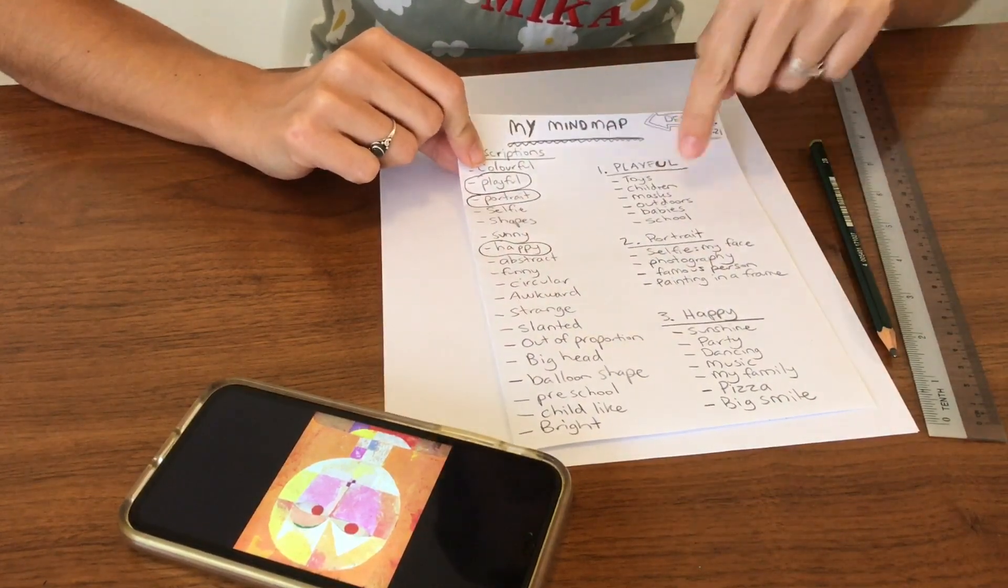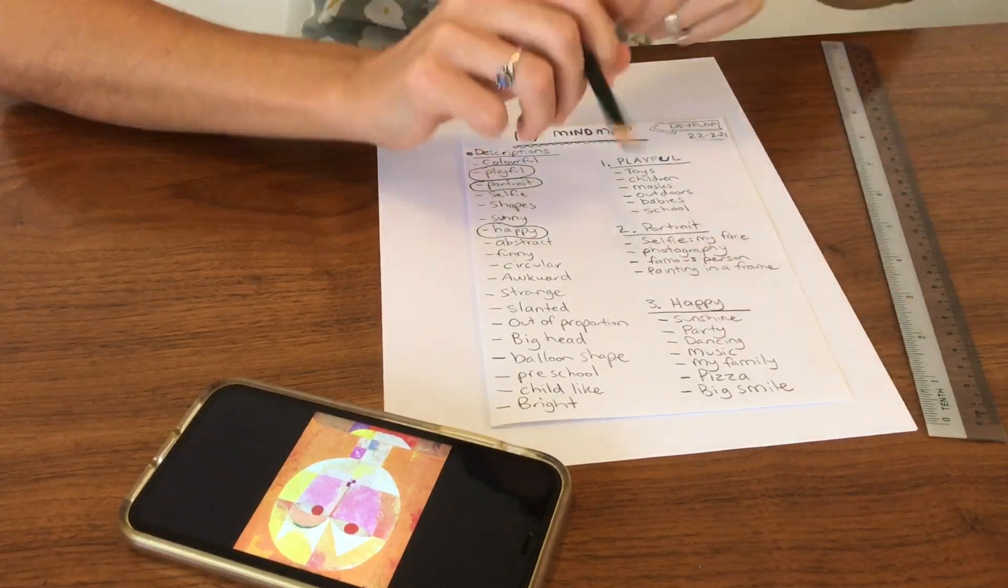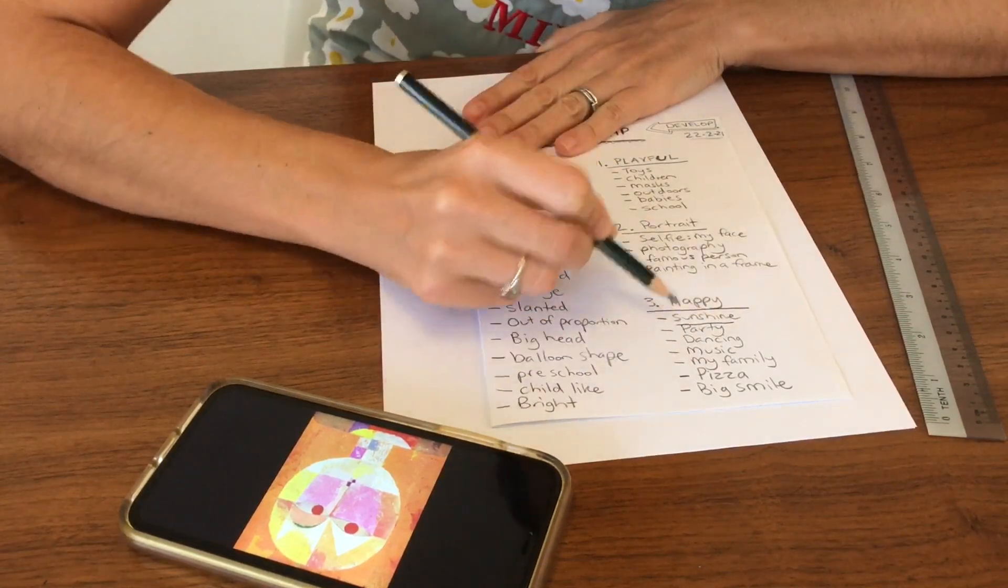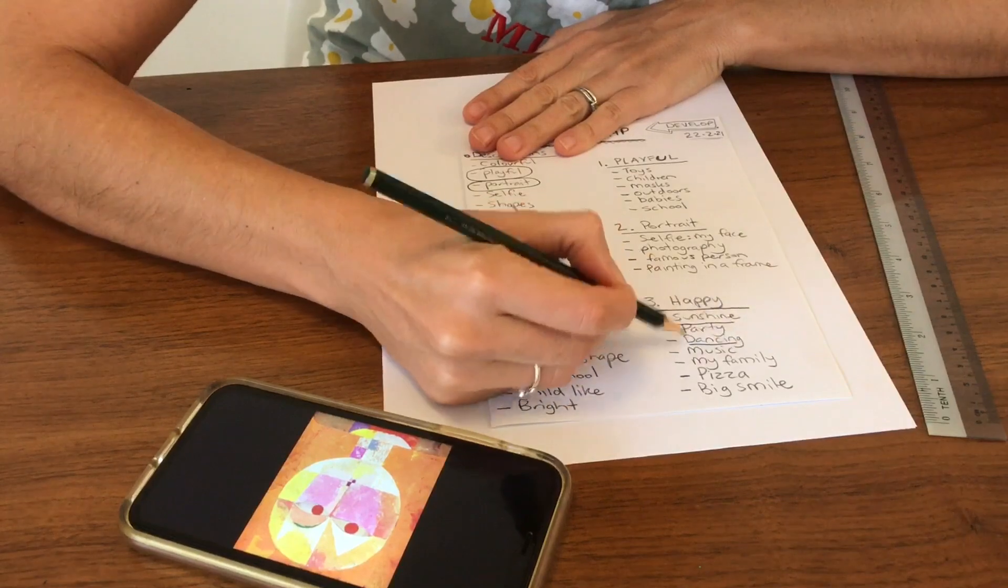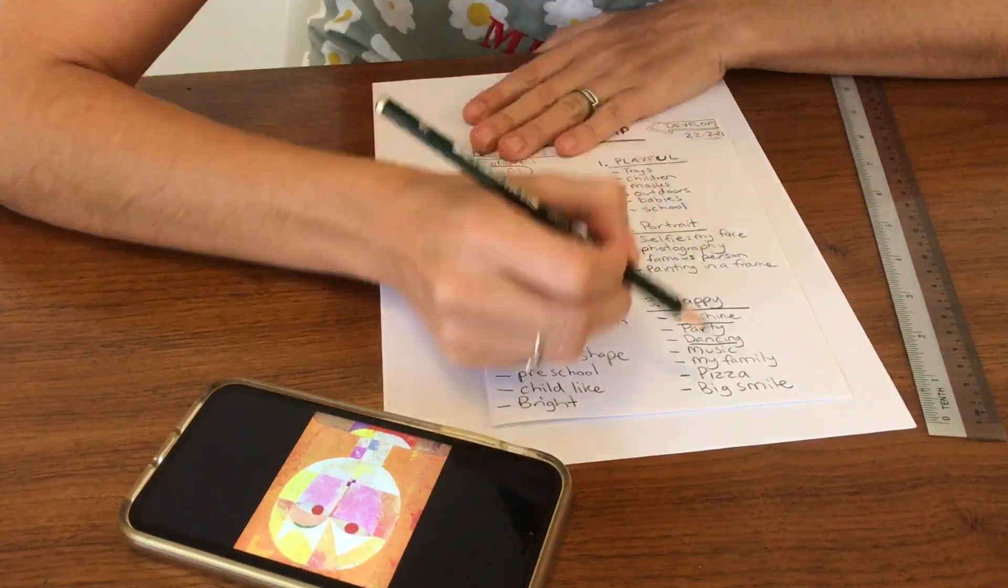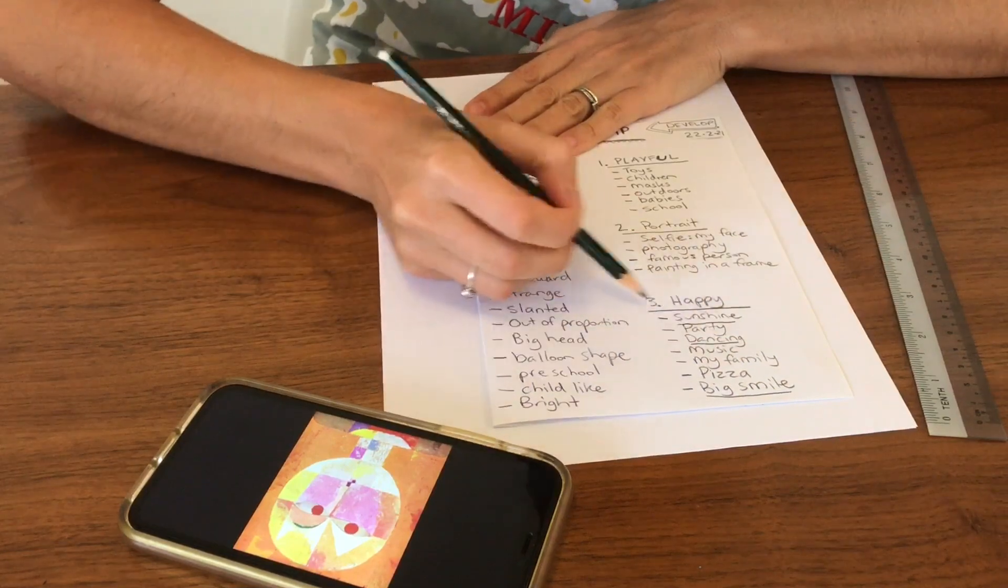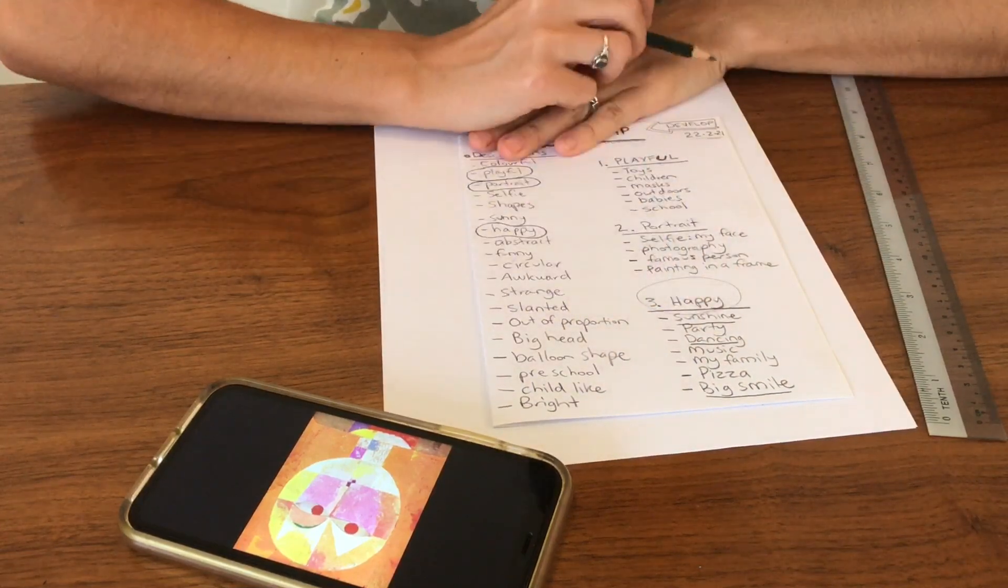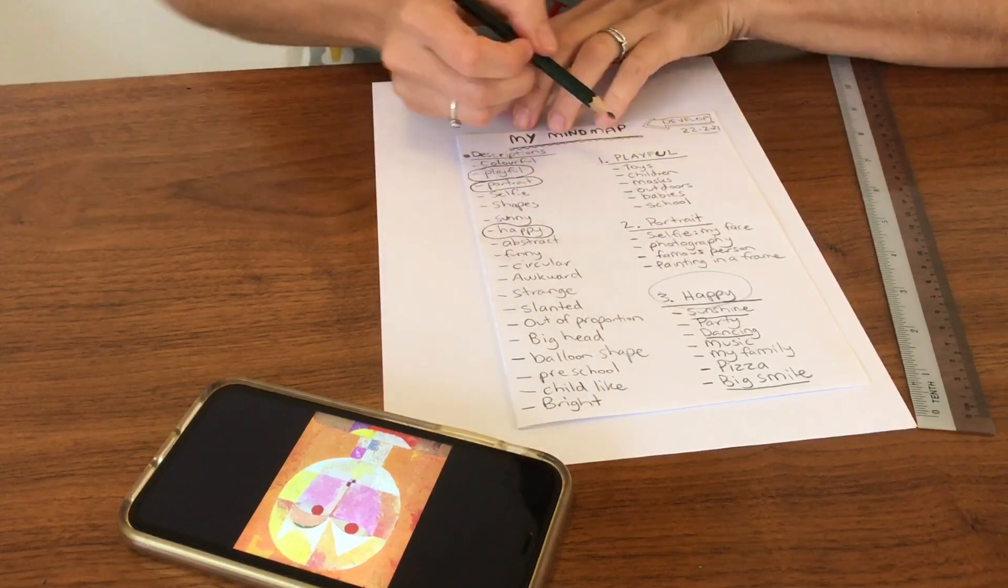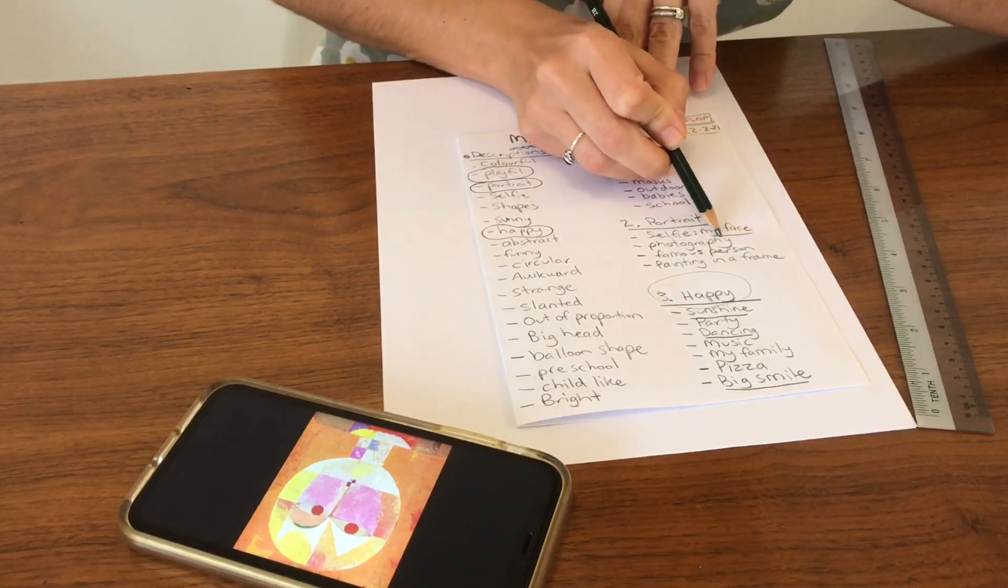So for my image I wrote playful, portrait and happy. And some of the words that stick out to me on here are things like sunshine. I would like to make an artwork to do with sunshine or dancing. I love those two words. I also love the idea of maybe like a big smile. So I really like this describing word. I think I'm really into the happy. I'm happy with happy. And I also like the idea of this kind of portrait, like my face.